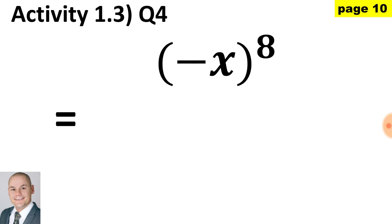Here in question 4, we have minus x inside the bracket raised to the exponent of 8. This is exactly the same as saying minus x multiplied by itself 8 times. Because it's raised to an even number, we'll end up with a positive answer. With x to the exponent of 1 multiplied by 8, that gives us a final power of x to the 8.